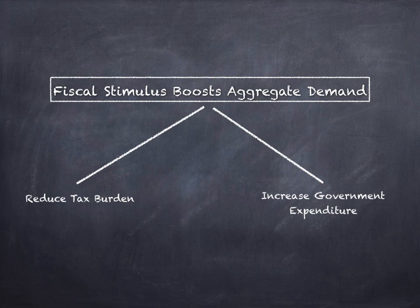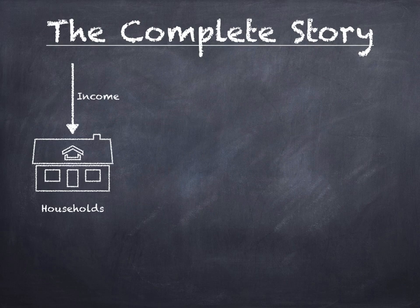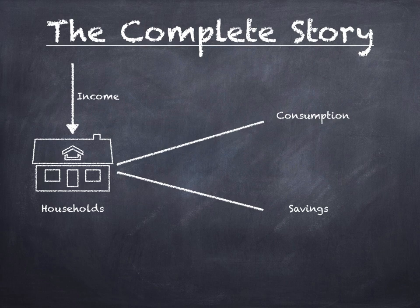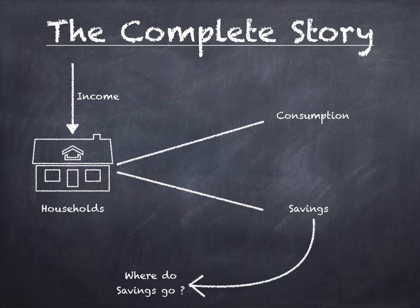The problem is that the Keynesian perspective is not the complete picture. When we view the economy from a Keynesian perspective only, we are ignoring a significant chunk of economic activity. What is that? Households get income and choose to spend it in two ways: a certain portion is spent in consumption of goods and services, but the rest is saved. The Keynesian perspective only focuses on the consumption aspect — but what happens to the savings? Where do savings go?